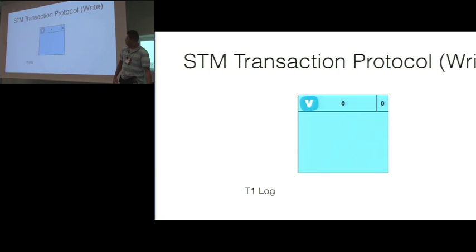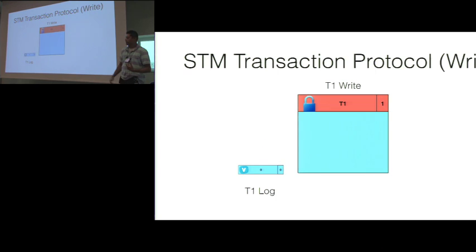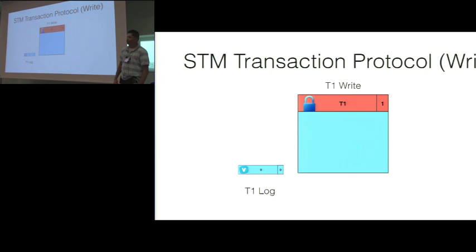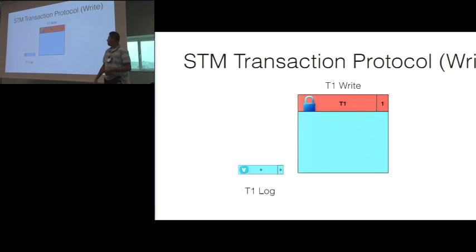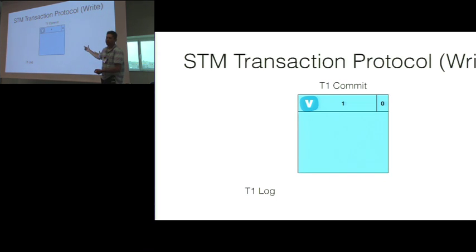For a write, it's somewhat similar. You first check the least significant bit to see whether the object is locked. If it's not locked, you record the previous version of the object and put your transaction ID into the object header, setting the least significant bit to 1 to indicate lock mode. This needs to be a CAS operation because it must go in atomically. When you commit, you increment the version number by 1 and write it to the header word — this does not need to be a CAS since you have ownership. So you need one CAS operation for each write.